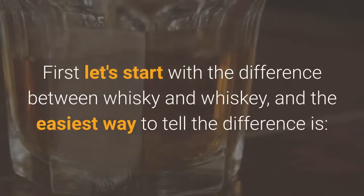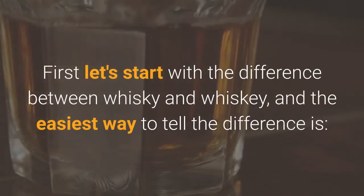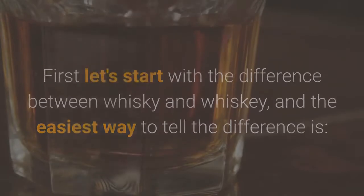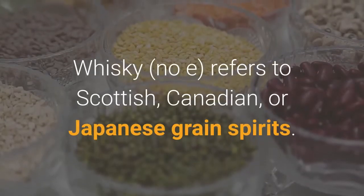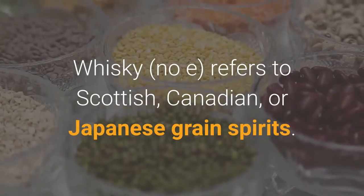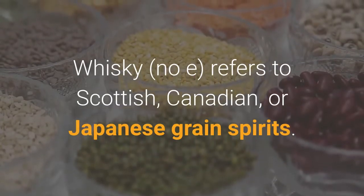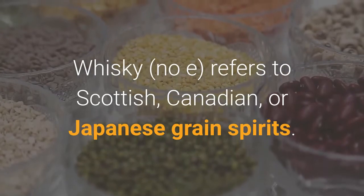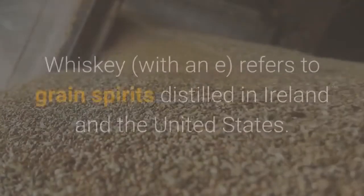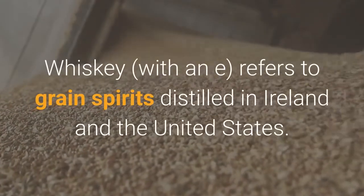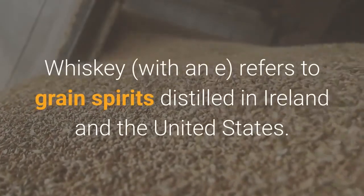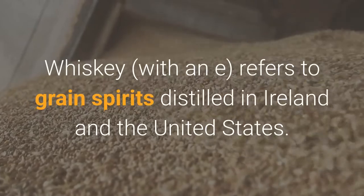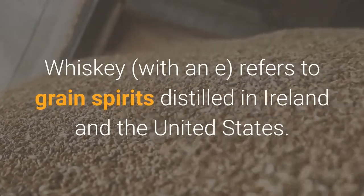First let's start with the difference between whisky and whiskey. The easiest way to tell the difference is: whisky, with no E, refers to Scottish, Canadian, or Japanese grain spirits. Whiskey, with an E, refers to grain spirits distilled in Ireland and the United States.